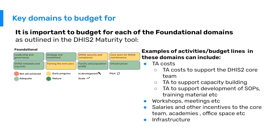Coming back to foundational pieces, it's really important to budget for the foundational domains as outlined in the DHIS2 maturity tools. Examples of budget lines in these domains include technical assistance costs to support the core team, capacity building, and development of standard operating procedures and training materials, as well as money for workshops or meetings to improve foundational areas.